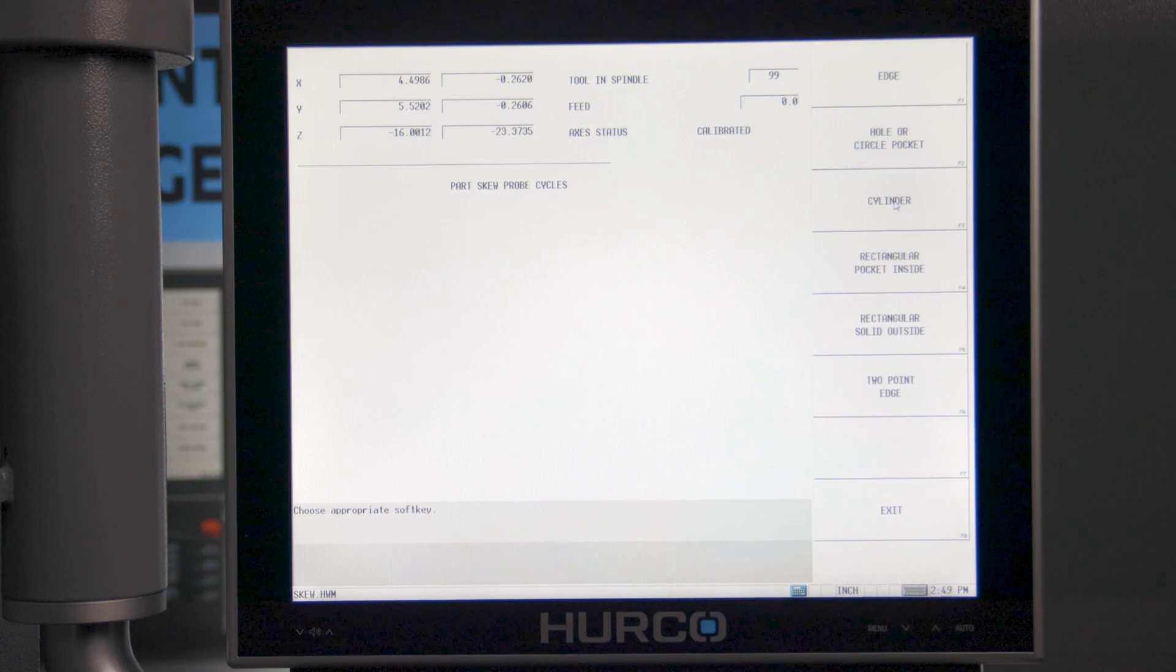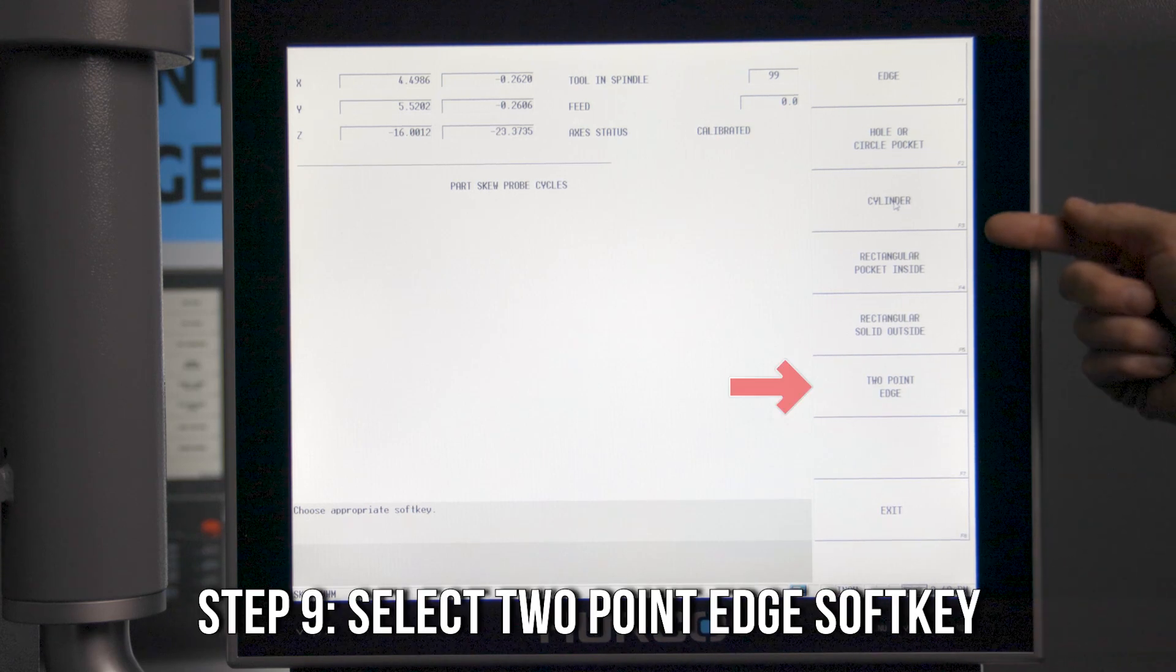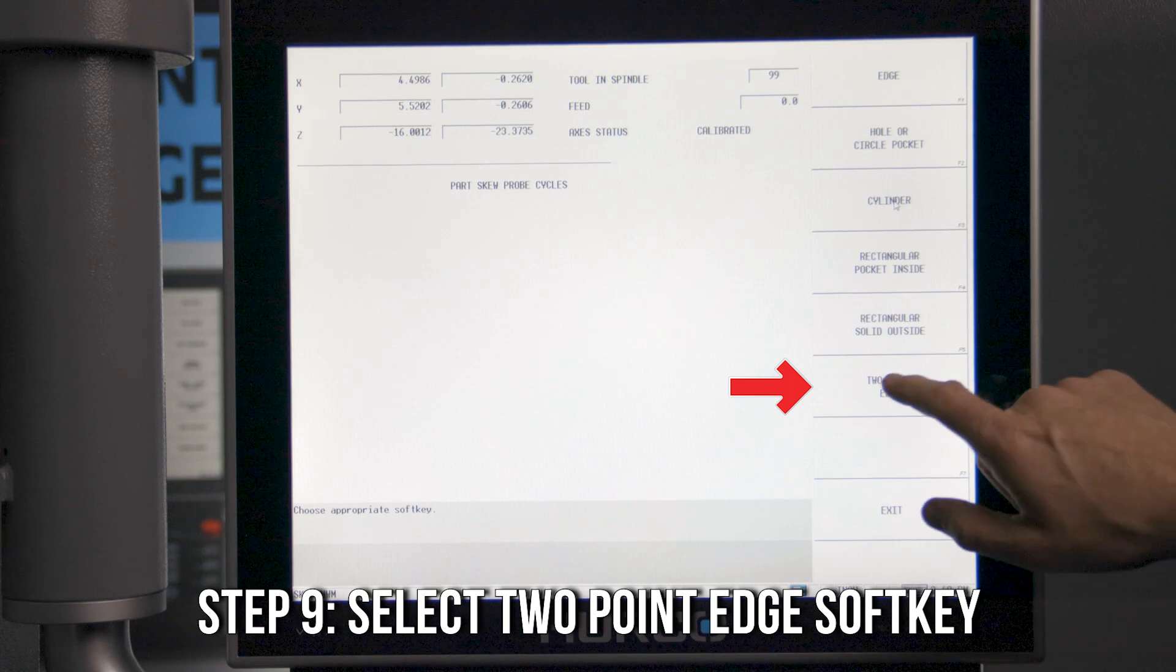Now on this screen, you'll see that we have quite a few options for skew cycles, but for our purposes today, we're going to select Two Point Edge.